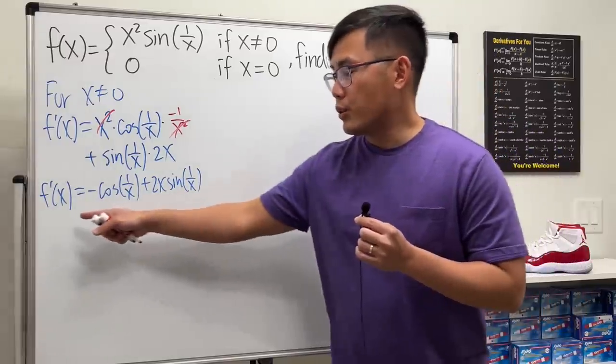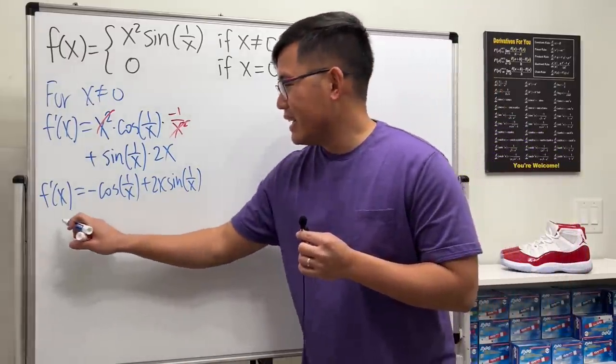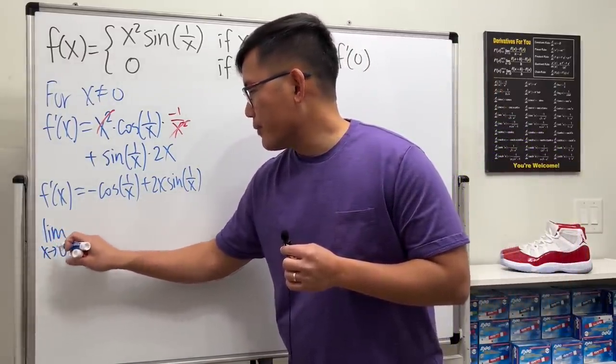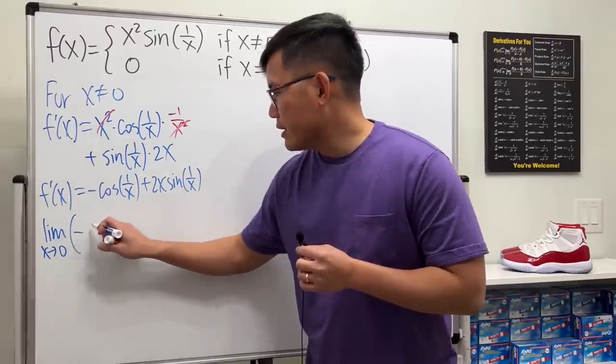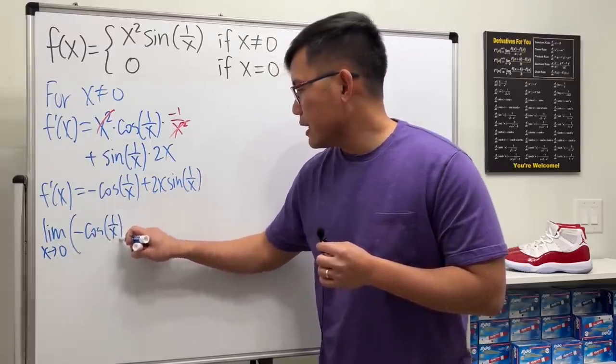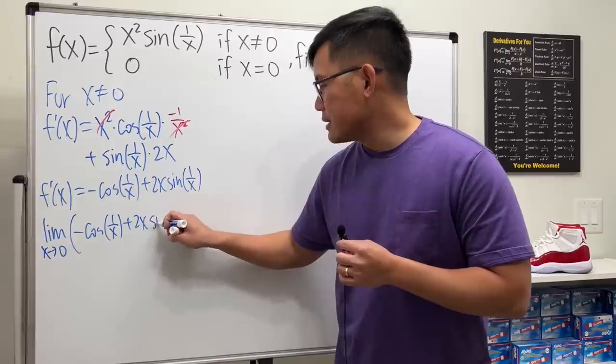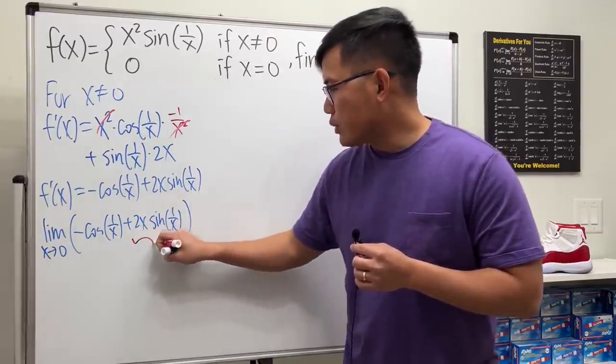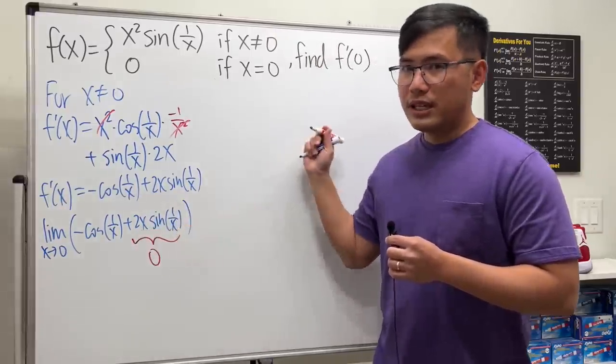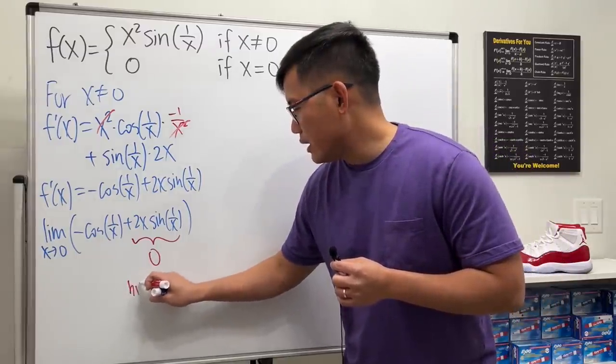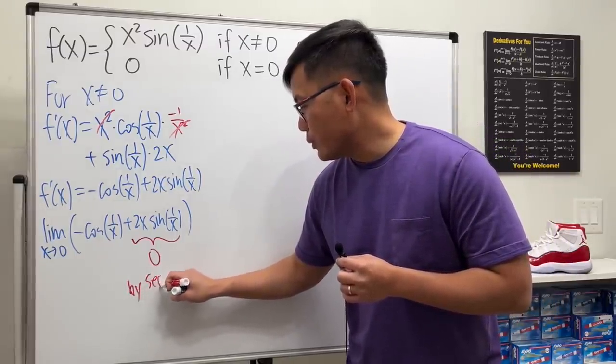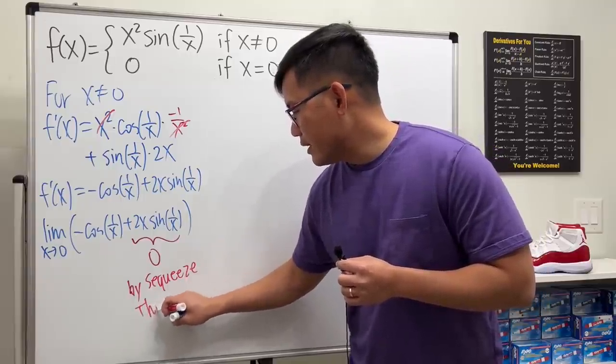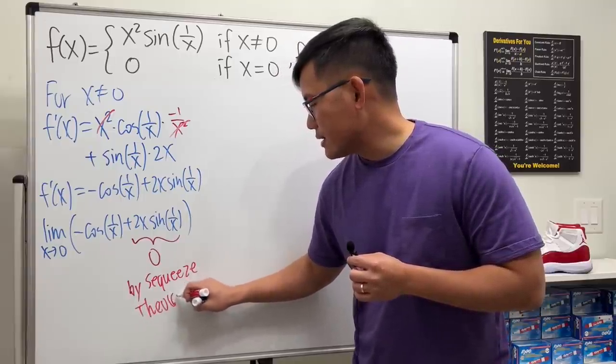Let's take a look right here, and I'll show you guys this. If we take the limit as x approaching 0 of this expression, negative cosine of 1 over x plus 2x times sine of 1 over x. I will tell you, this right here will give us 0. You will see that later on. We will have to use the squeeze theorem to prove that. So just wait for it.